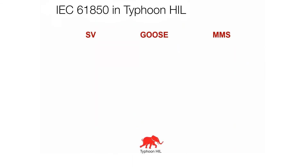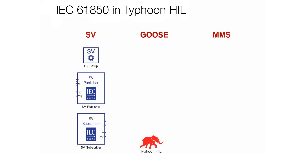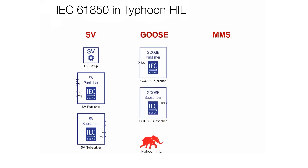Looking at Typhoon HIL, we have the SV, GOOSE, and MMS protocols implemented. For SV, we have three schematic components: SV setup, SV publisher, and SV subscriber. This protocol is publisher-subscriber based. GOOSE has a GOOSE publisher and GOOSE subscriber — it is also publisher-subscriber. MMS is a server-client model and we have only the MMS server, meaning that an external client can connect to the MMS server and read or write values to the HIL device.